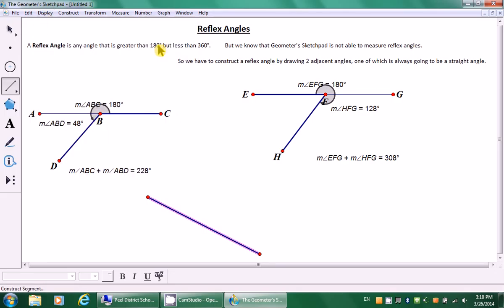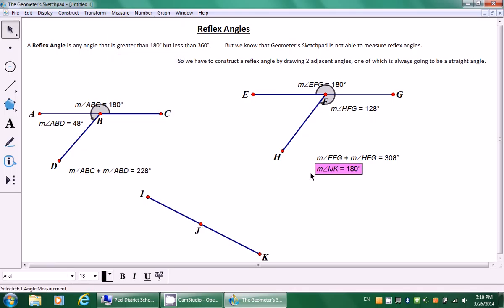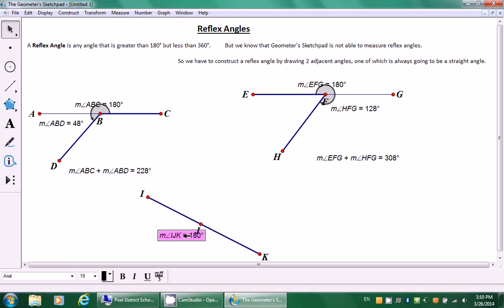Let's draw one more. So this time, I don't want you to hold the shift key. I want you to draw kind of like a diagonal line. I'll go up and change the line style back to medium. I'm going to create the vertex in the middle. I'm going to measure my straight angle. Endpoint, vertex, endpoint, measure angle. I'm going to leave this over here this time.